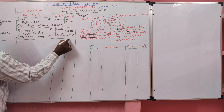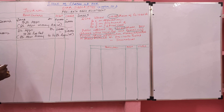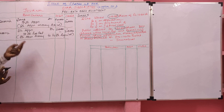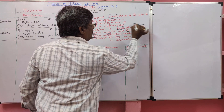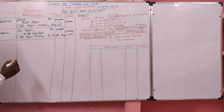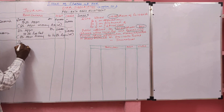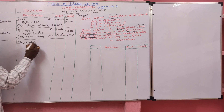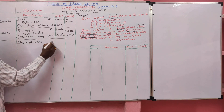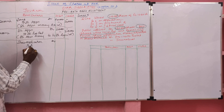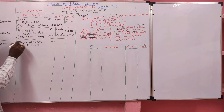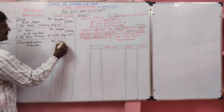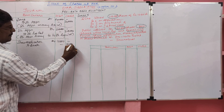We received applications for 1,20,000 shares; we can transfer 1,00,000. Excess is 20,000 — of which 8,000 share application money is rejected and refunded. Entry: Share Application Account Dr to Bank. 8,000 × Rs. 2 = Rs. 16,000 refunded.